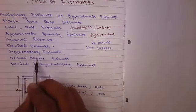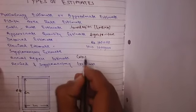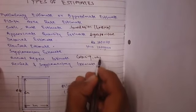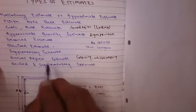And next, annual repair estimate. It covers the coloring, painting, whitewashing, etc. This is charged annually.